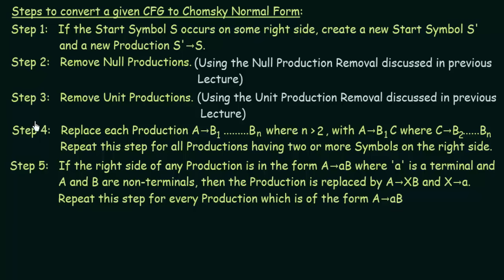When you perform all these steps, steps 1 to 5, depending upon the kind of productions that you have, you will obtain the Chomsky Normal Form of the given context free grammar. In the next lecture, we will be taking an example where we will be solving a problem converting a given CFG to its equivalent Chomsky Normal Form. I hope this was helpful to you, see you in the next one with an example.